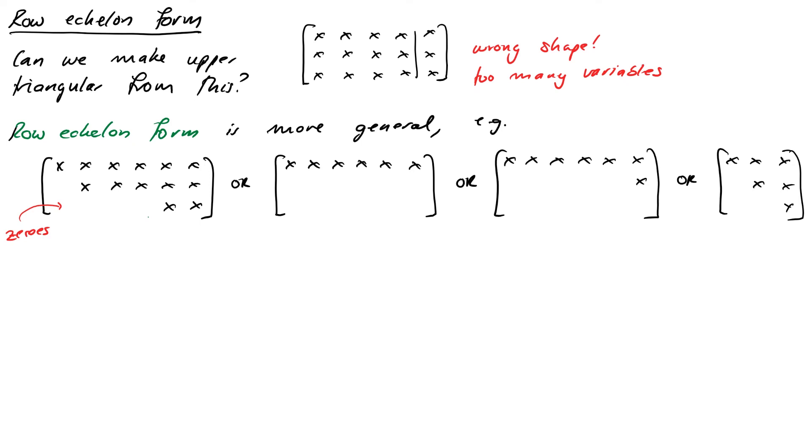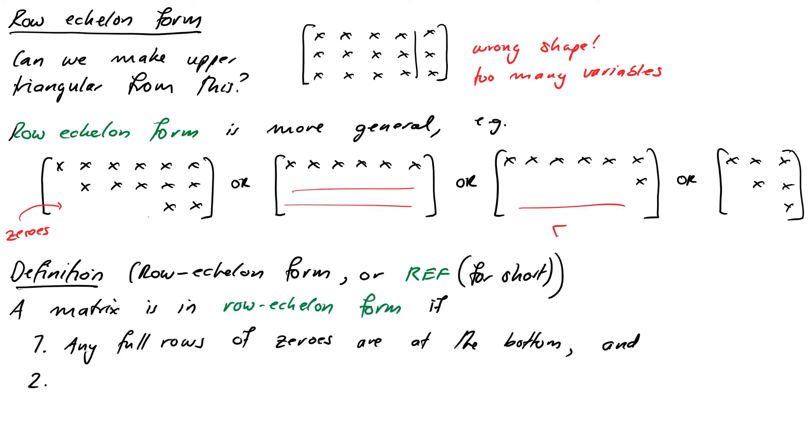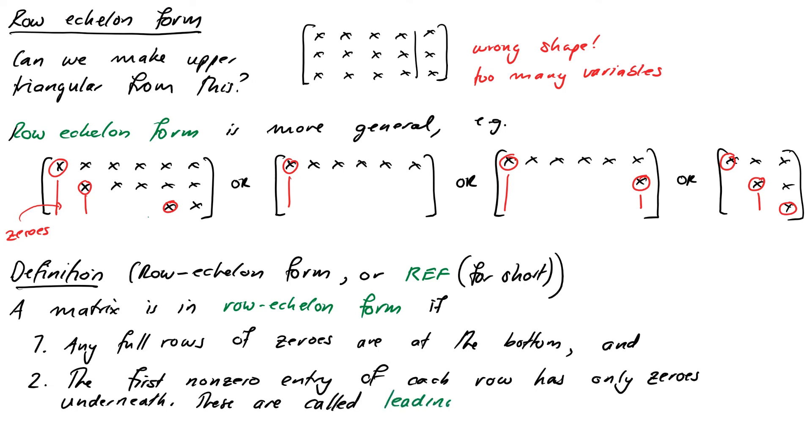For row echelon form it's quite easy to specify with a couple of rules. First rule is that any full rows of zeros must be at the bottom of the matrix. The second rule is that the first non-zero entry of each row from the left must have only zeros underneath it. These first non-zero entries of each row are called leading entries. If the matrix is an augmented matrix then the variables associated with the leading entries are called pivot variables. If the constant term is a pivot then we've got issues, more on this later. When we're doing Gaussian elimination we're actually targeting row echelon form of which upper triangular is a special case.